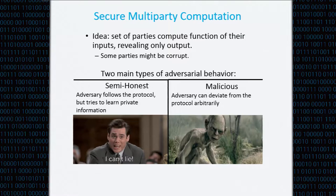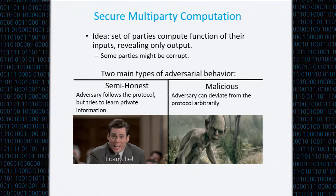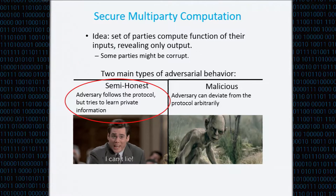Of course it's always preferable to protect against malicious corruption, but in some cases it's also interesting to study semi-honest corruption. For example, in some scenarios it might be sufficient if we assume that the code cannot be tampered with. Another reason is that advancements made in the semi-honest model often have led to similar advancements in the malicious model. In this work, we focused on semi-honest corruption.